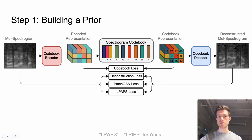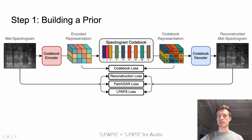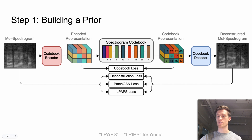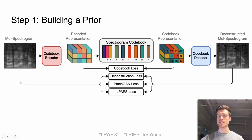Since the perceptual loss used in VQGAN is based on ImageNet pre-trained VGG16, it is unreasonable to expect that it will perform well on spectrograms due to the domain gap. For this reason, we train a VGG16 on spectrograms from scratch as a classifier on a large-scale open-domain dataset called VGGSound.